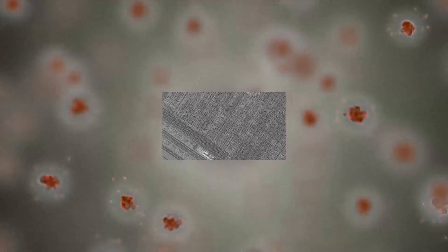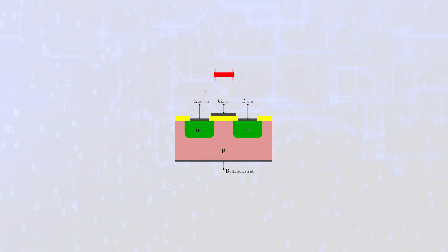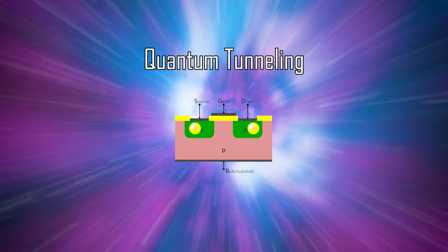And the smaller we go, the more prominent the interference of quantum mechanics will be. As we shrink transistors down, the closer the source and the drain are to each other, the higher the chance of electrons quantum tunneling across, essentially real-life subatomic teleportation.